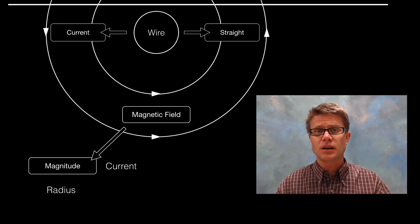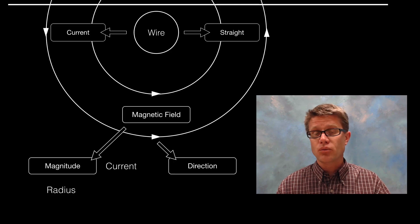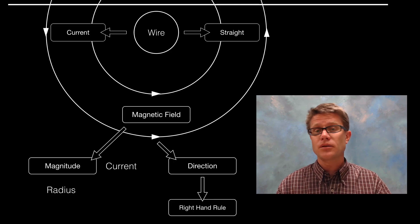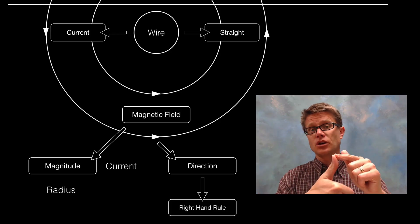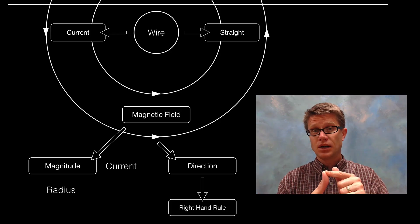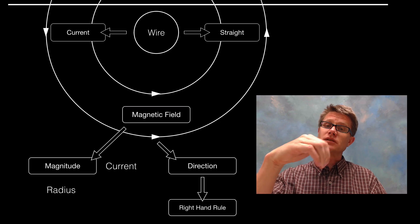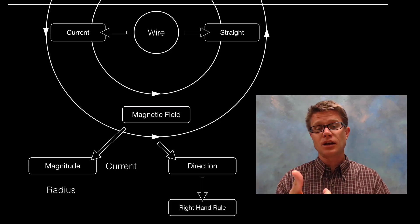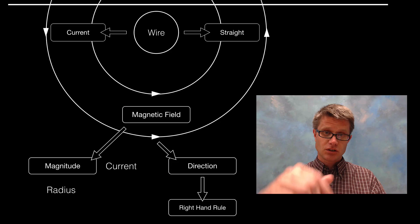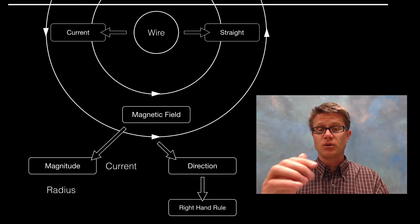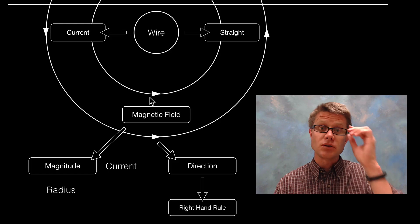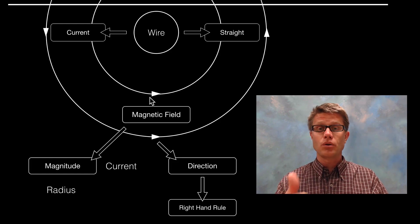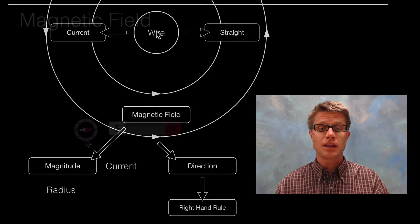The direction of the magnetic field is determined by the right-hand rule. Your thumb points in the direction the current is moving, and then the curling of your fingers shows you where that magnetic field is. So if the current is flowing towards me, I hold my thumb pointing towards me and my curling fingers show the direction of the magnetic field circling the wire.